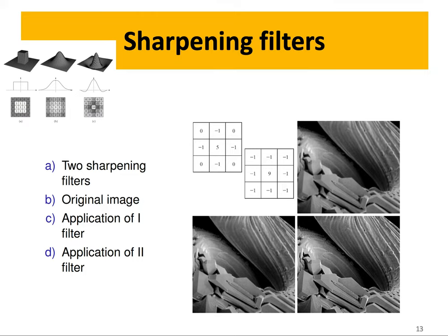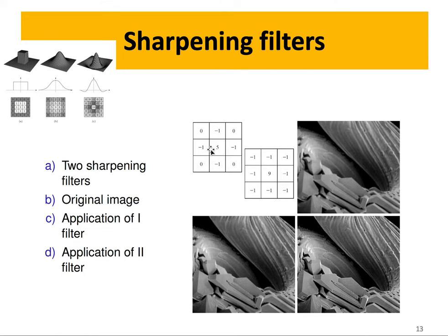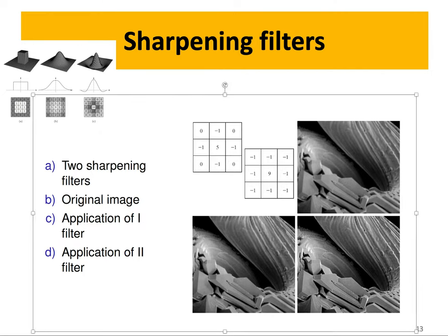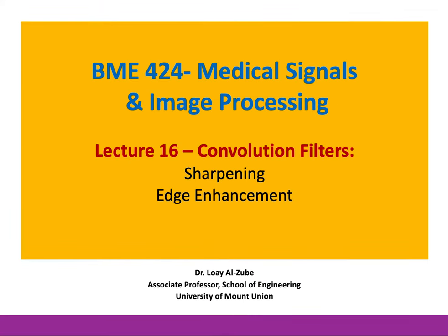Depending on the size of your kernel matrix, if you have a three-by-three matrix you will get a certain level of sharpening, but if you increase the matrix size you will get sharper images. So if this is your original image, a three-by-three sharpening kernel gives one result, and a nine-by-nine kernel makes the variations even sharper. It's important to keep that in mind when doing image enhancement via sharpening: the larger the filter matrix size, the higher the sharpness in the result.